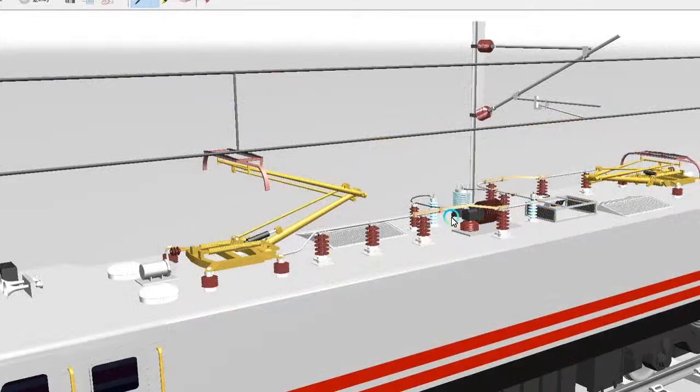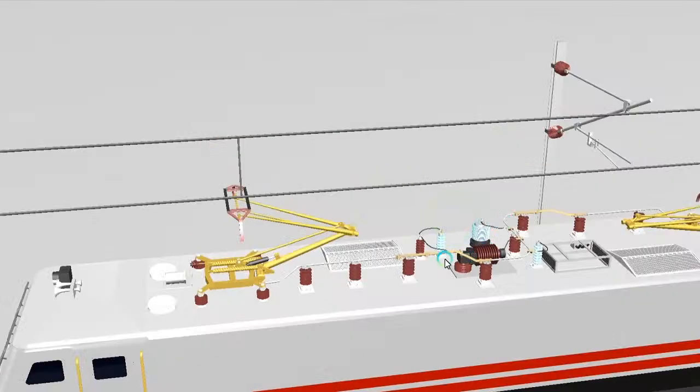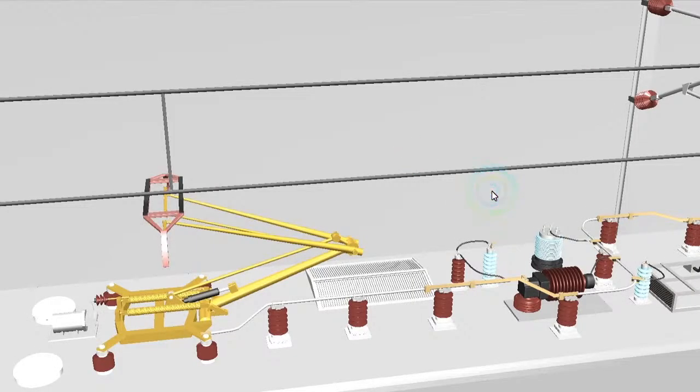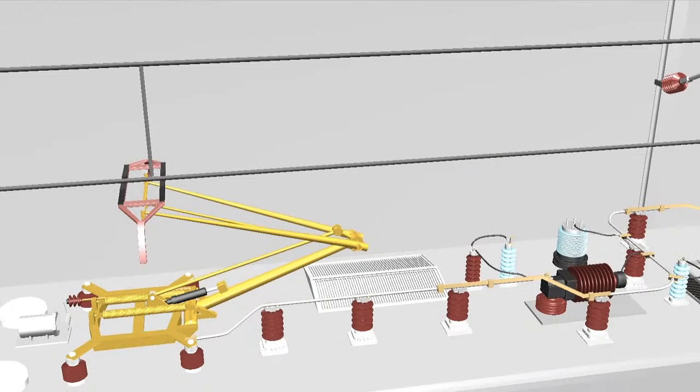So now we will discuss why 25 kV is important in this catenary system or in this electrification system. And here the 25 kV current flows with this contact wire. So as we know it, so let's learn.